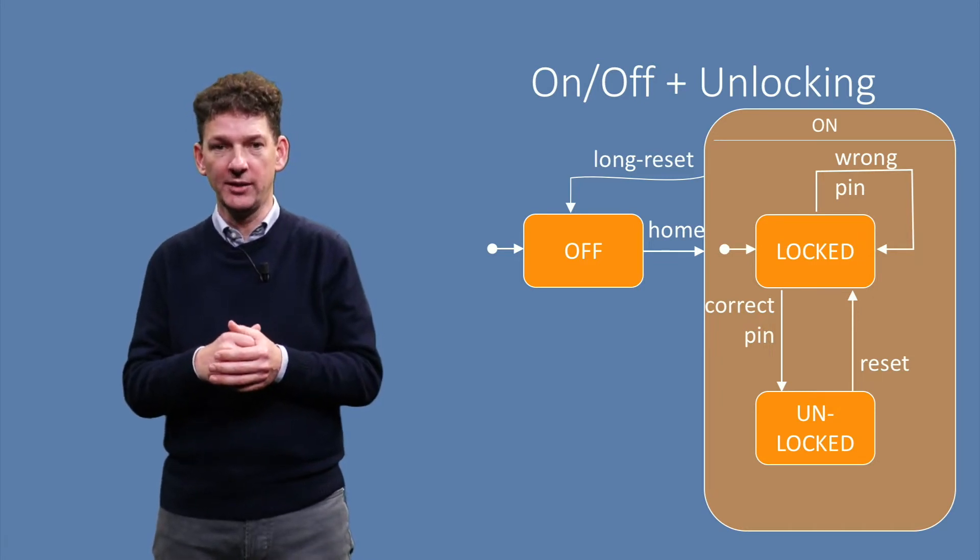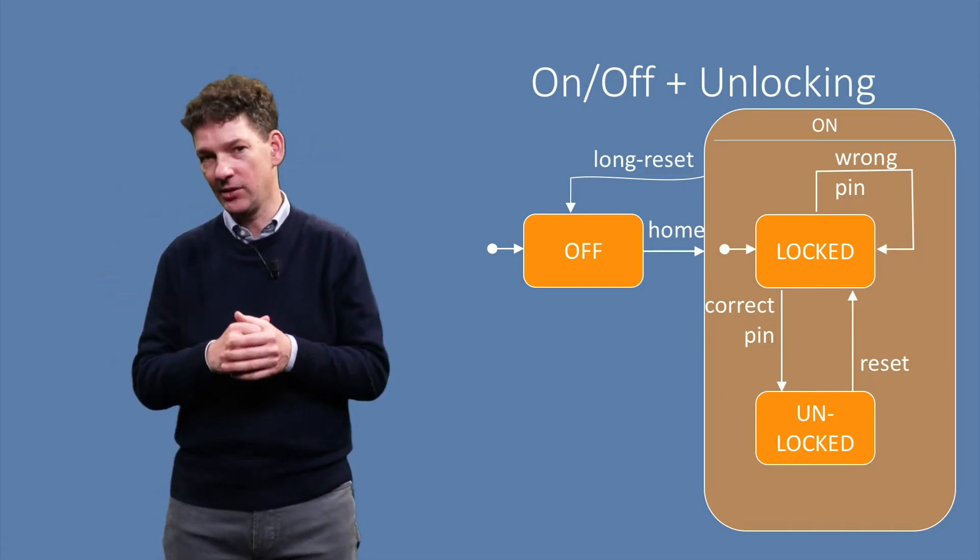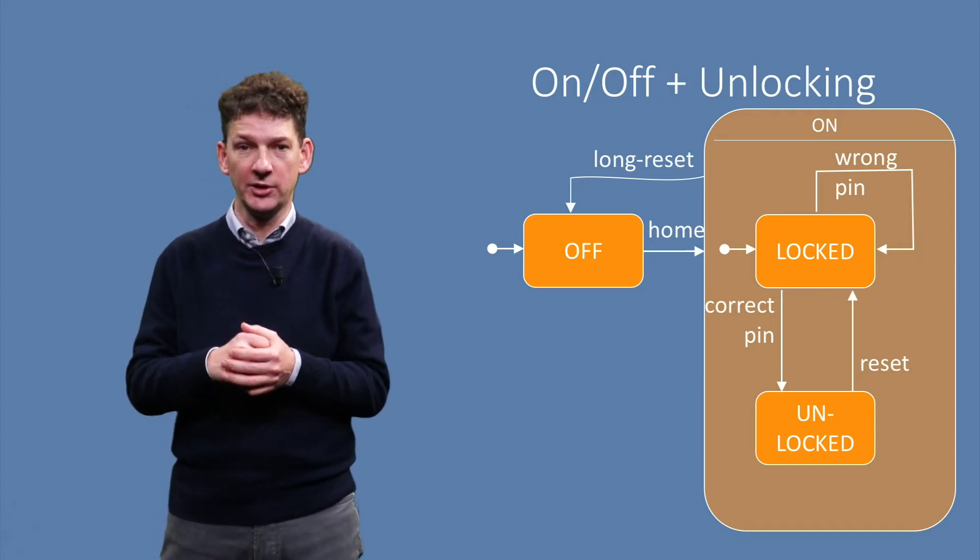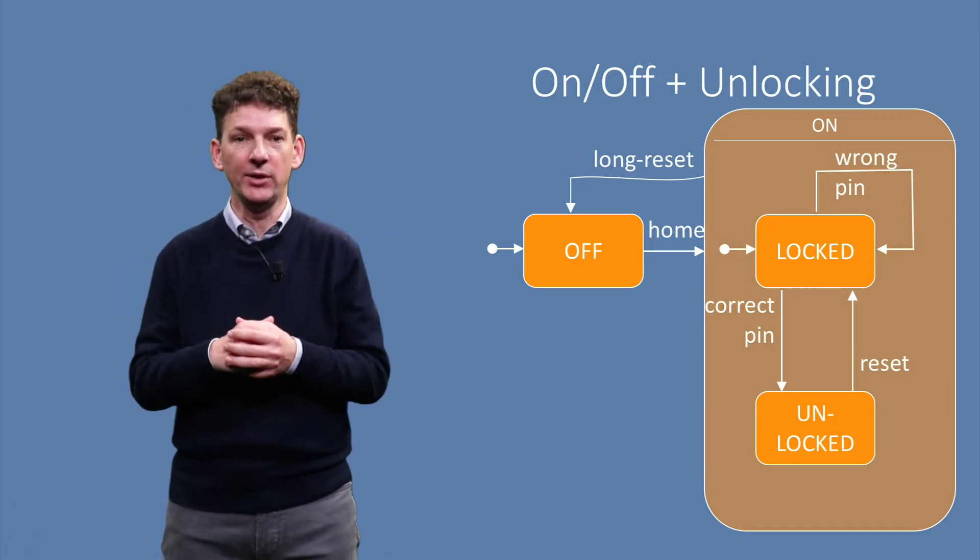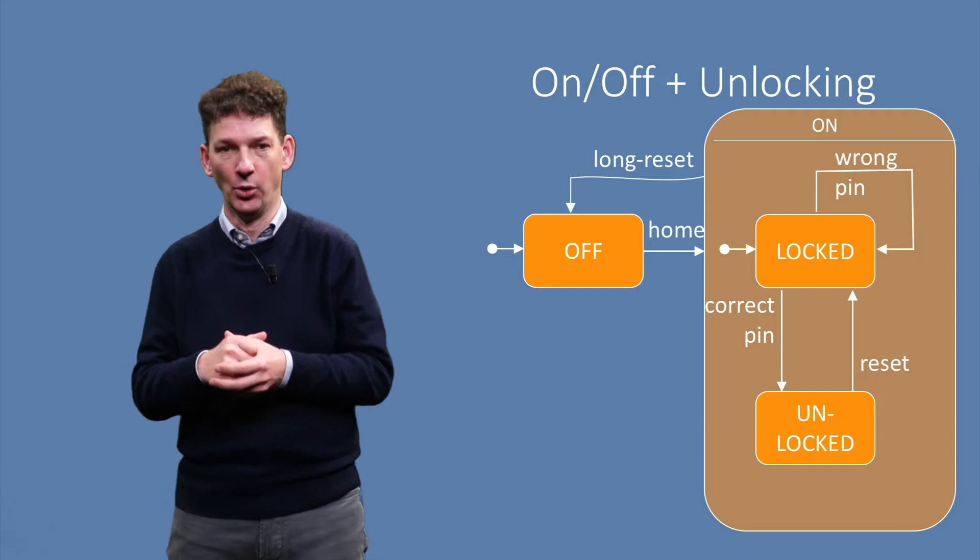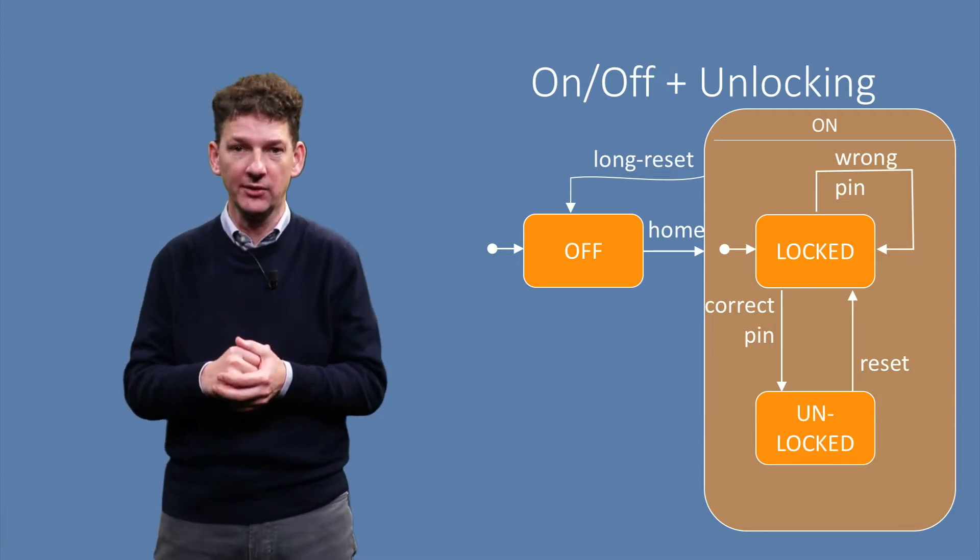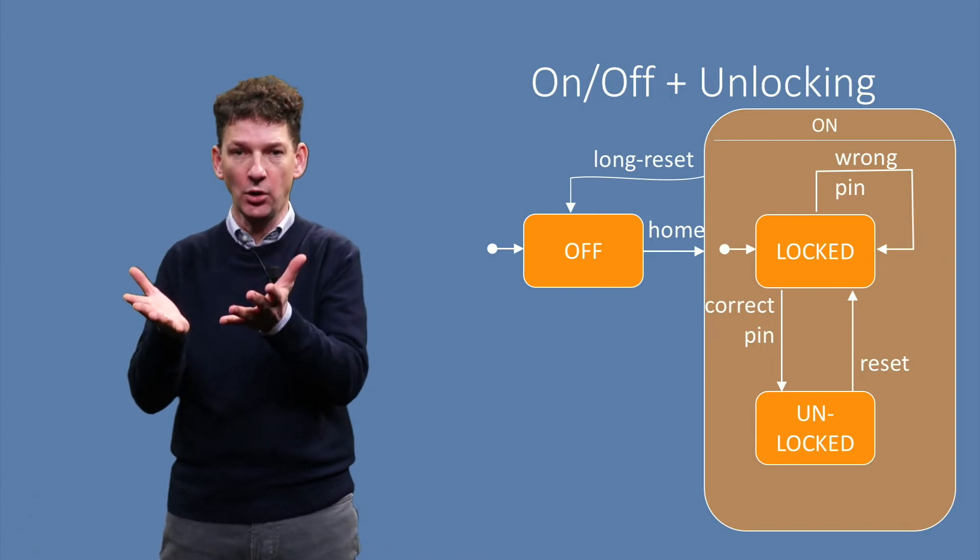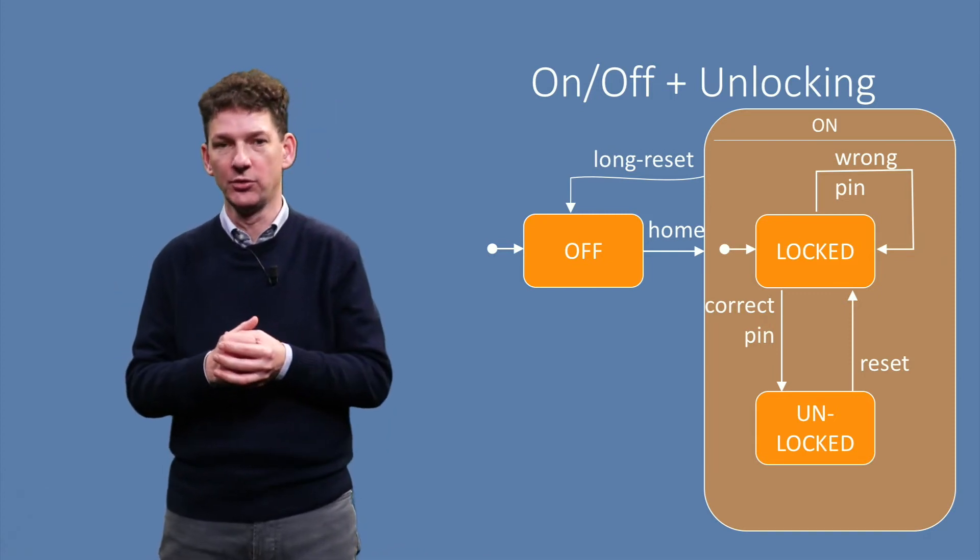The ON super-state has one outgoing transition. This is a shortcut for an outgoing transition from any state within the super-state. In other words, the long reset coming out of the ON state can be triggered from either the locked or the unlocked sub-state.